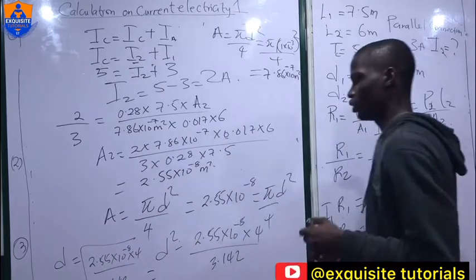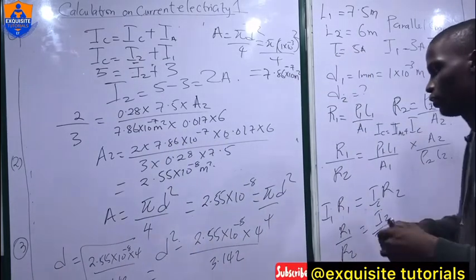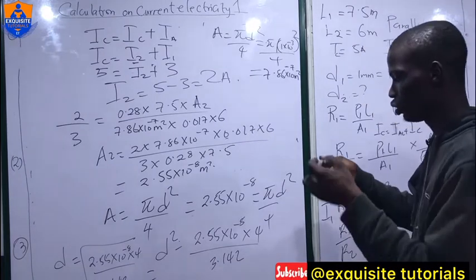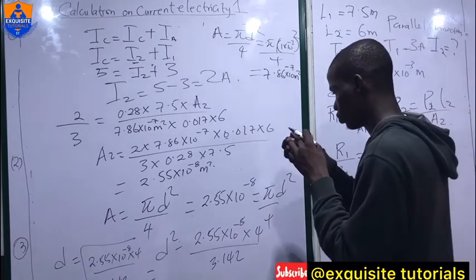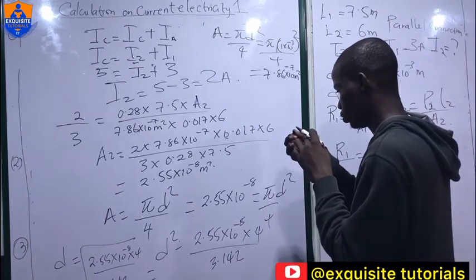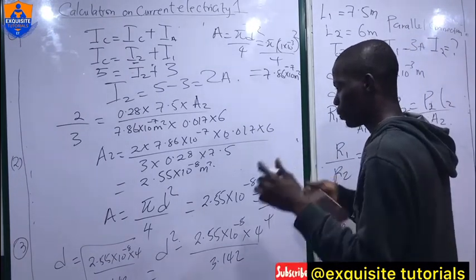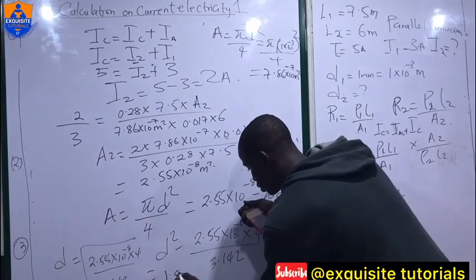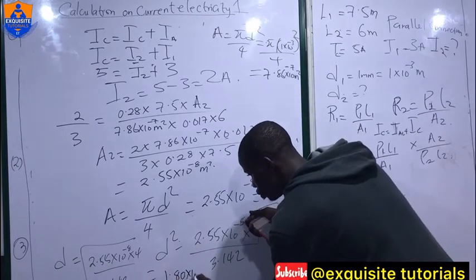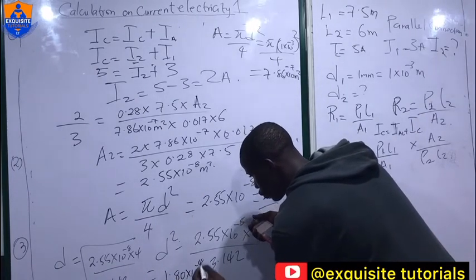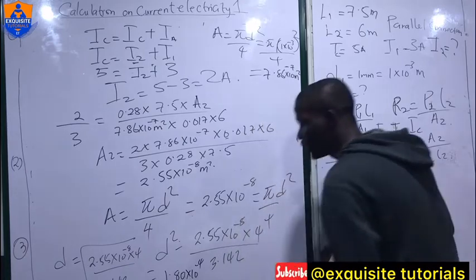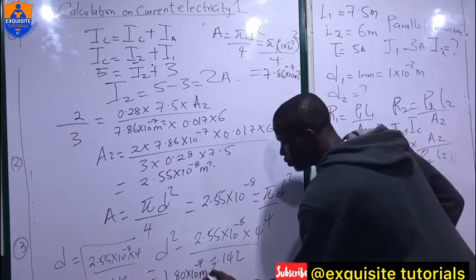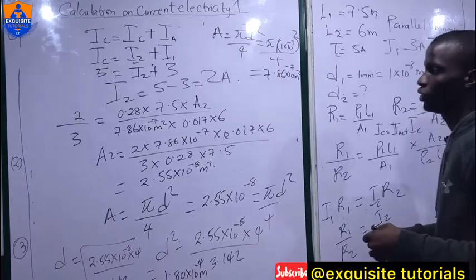Solving that gives D = 1.80×10⁻⁴ meters. Take note, this value is in meters. So this is the answer for the diameter of the copper wire.